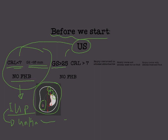If on ultrasound we see a gestational sac of more than 25 millimeters and a crown-rump length of more than 7 millimeters, again with no fetal heartbeat, we are seeing a relatively large fetus with no cardiac activity. If we see a gestational sac of more than 25 mm and a crown-rump length of more than 7 mm with no fetal heartbeat, then we can say that this is an empty sac.